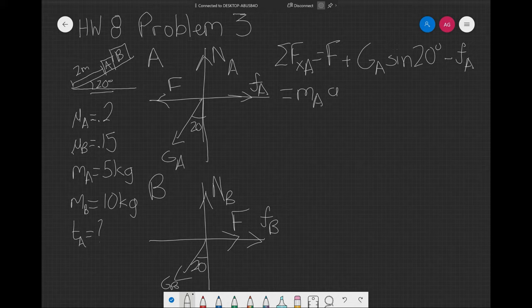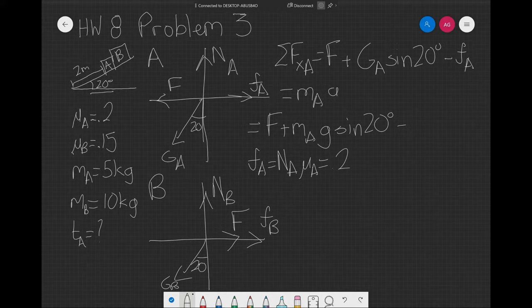This is all equal to mass A times the acceleration of the system. And if we expand, we'll be getting F plus M_A times G sine of 20 degrees, minus we know that F_A is equal to mu_A, which is equal to 0.2, times M_A times the normal force.